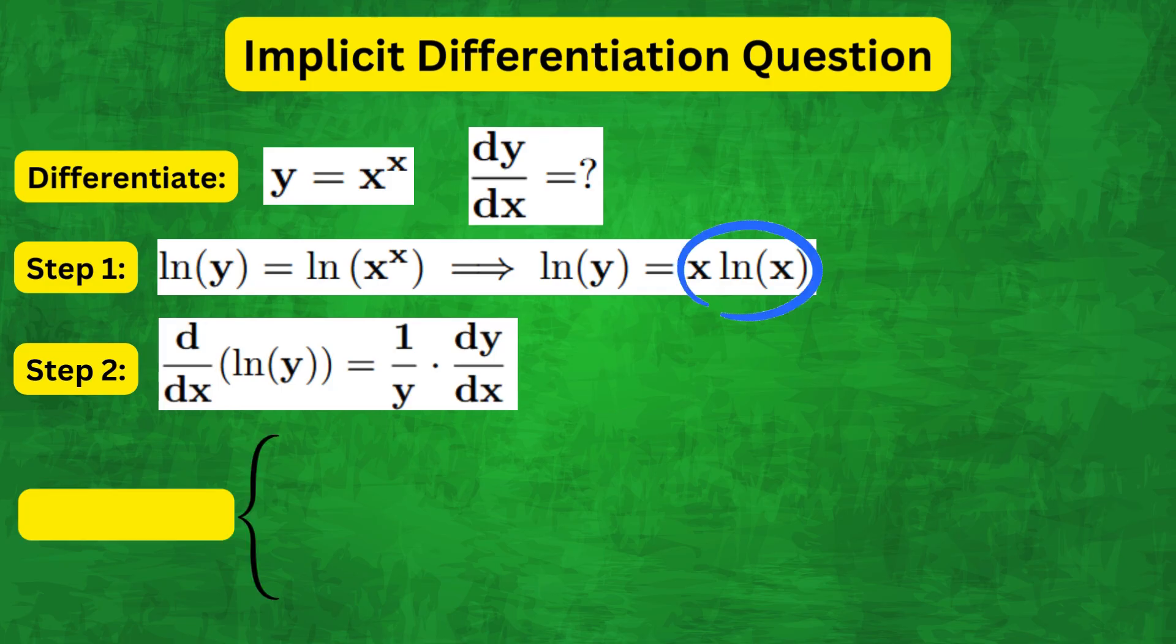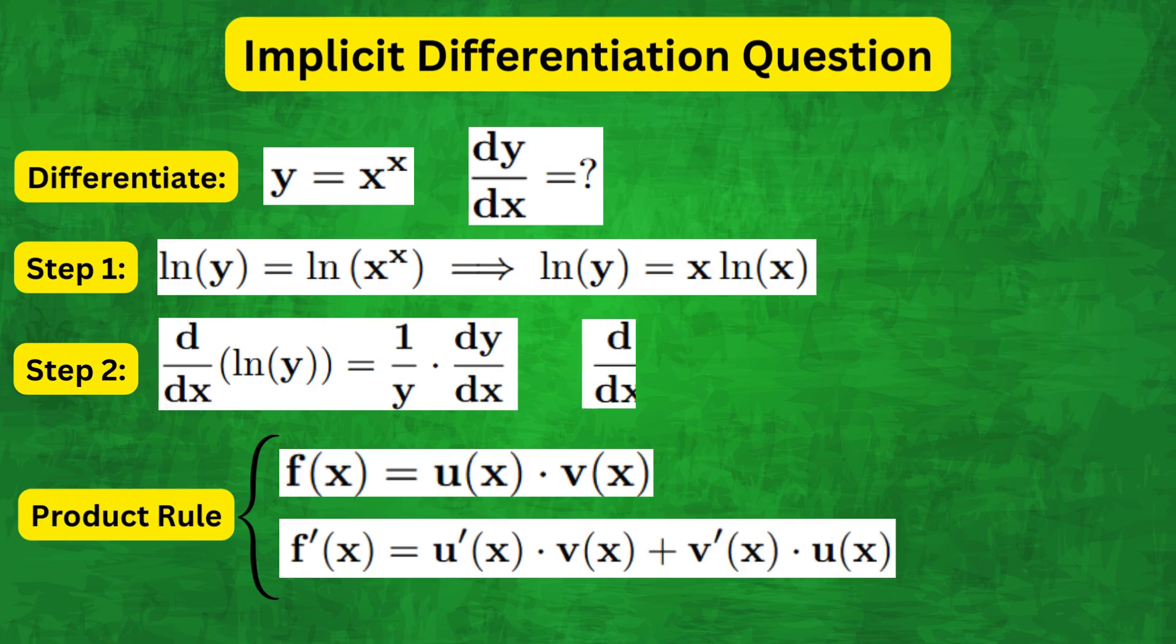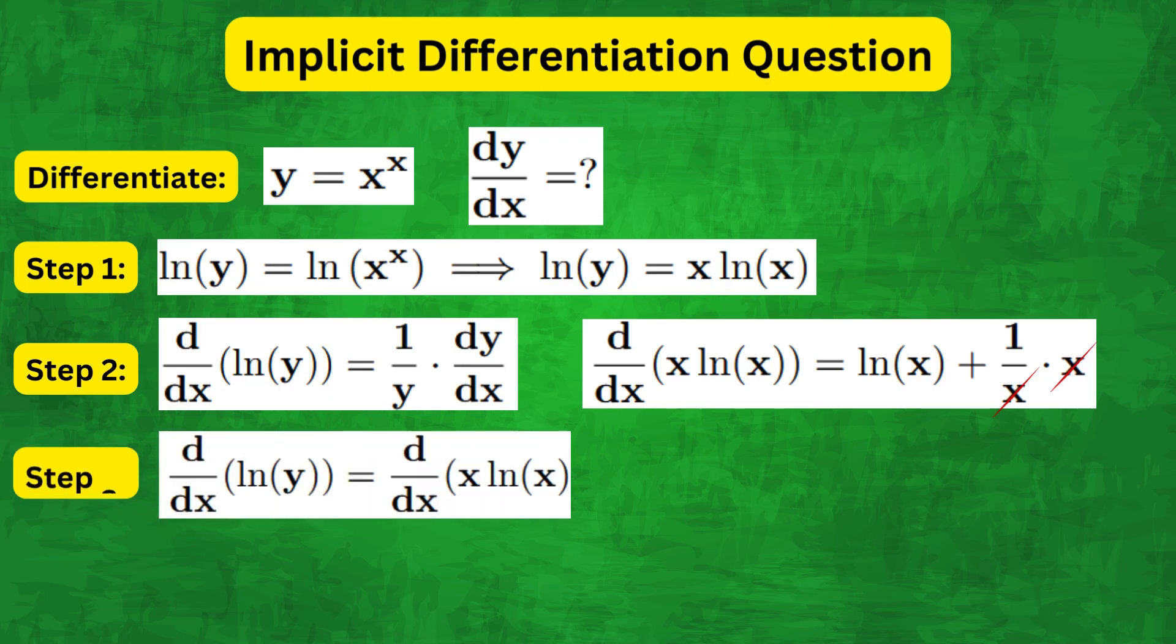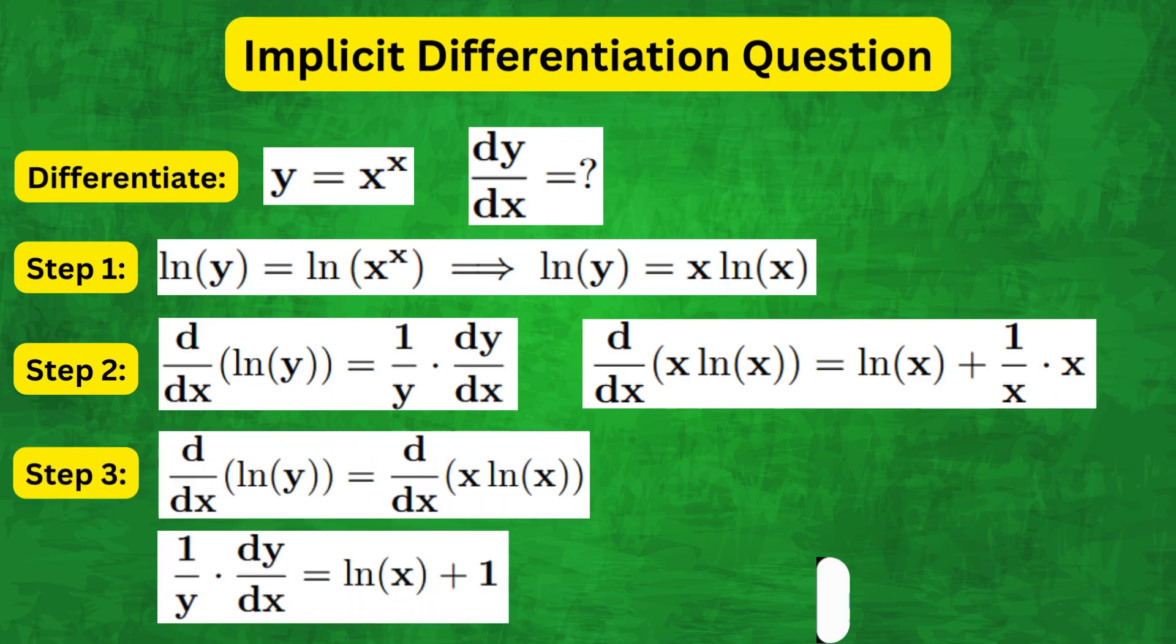And the right hand side is a product of two functions of x. So we can use the product rule to get natural log of x plus one over x times x. And then the differential equation becomes one over y times dy by dx equals natural log of x plus one.